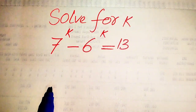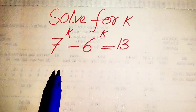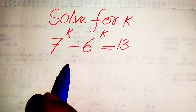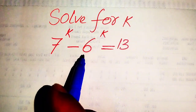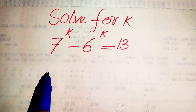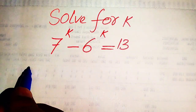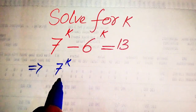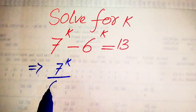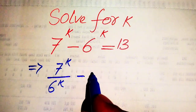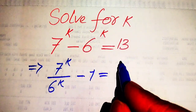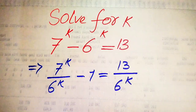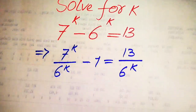The first thing we are going to do is divide both sides by 6 to the power of k. When we divide each term by 6^k, it is written as 7^k divided by 6^k, minus 1, equals 13 divided by 6^k.